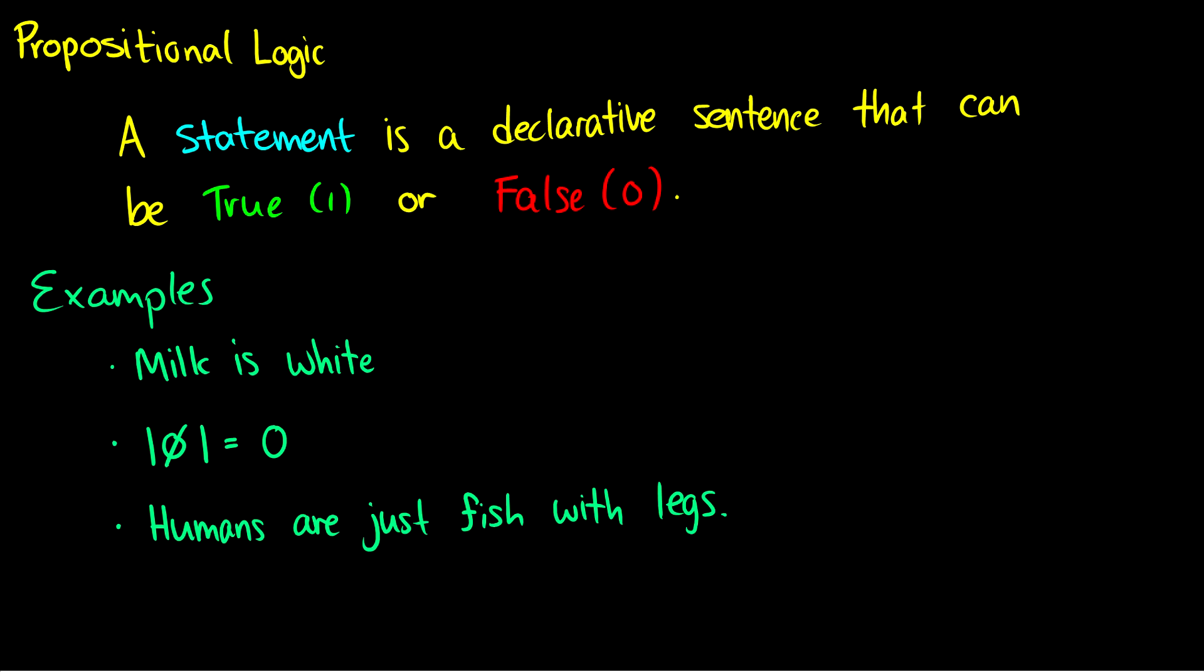Some examples of statements would be something like milk is white, and this can be true or false. For the most part, it is true, but chocolate milk is brown, so that might not be white. Second example, the cardinality of the empty set is equal to zero. That is also true, so that is a statement. And finally, humans are just fish with legs. Well, that's not true. We are not fish with legs. We're much more than that. So that's false.